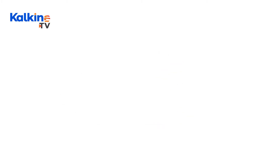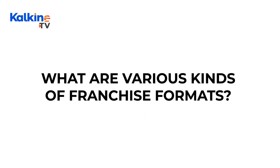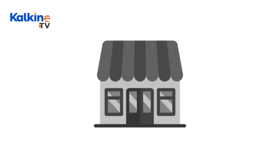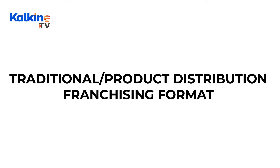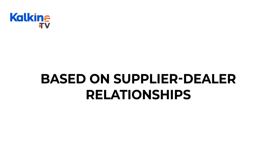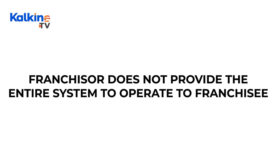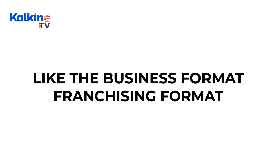There could be multiple franchises set up depending upon the business of the franchisor. What are the various kinds of franchise formats? Let's start with business format. The franchising model is all about the needs of the proprietary business owner. Usually the standard process followed in a market while giving a franchise is business format franchising. Traditional product distribution franchising format is based on supplier-dealer relationships, where the franchisee only distributes the franchisor's products. The franchisor does not provide the entire system to operate to the franchisee, unlike the business format franchising.